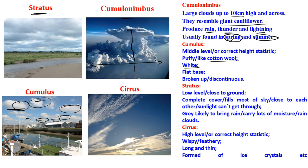Then we have the stratus cloud, which is a low-level cloud close to the ground. It has complete cover, filling most of the sky, and the clouds are close to each other so no sunlight can get through. It is usually gray in color and can bring down a little rain.